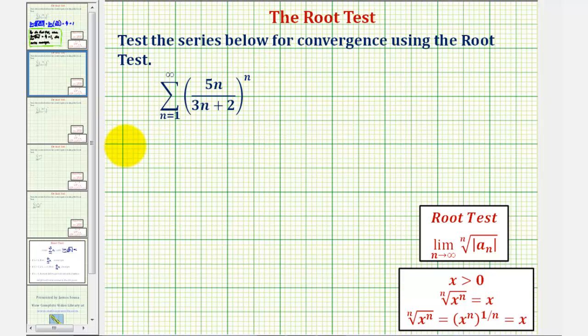So begin by taking the limit as n approaches infinity of the nth root of the absolute value of five n divided by the quantity three n plus two, all raised to the nth power.